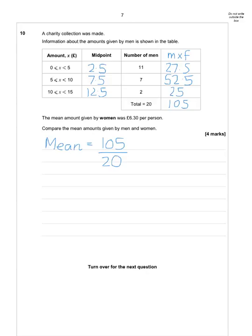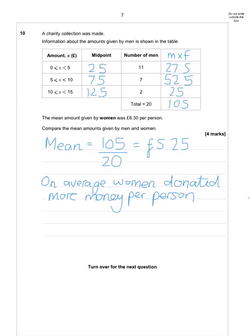And in this case, that's the number of men. Now, when I work that out, I can see that on average, men spend £5.25. So let's make sure I've answered this question. It's talking about the mean amount given by women. Compare the mean amounts given by men and women. So I'm going to have to add here. On average, women donated more money per person.